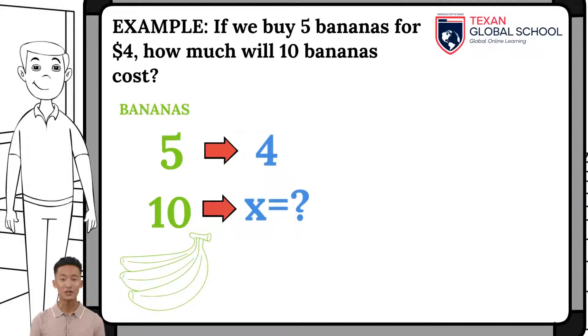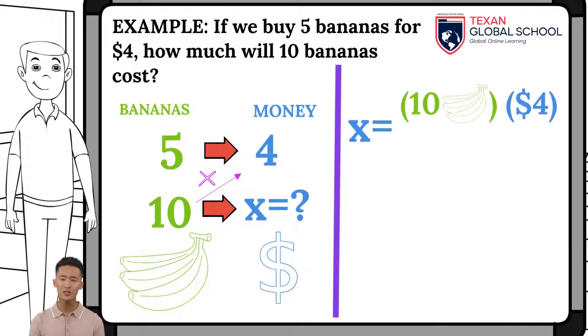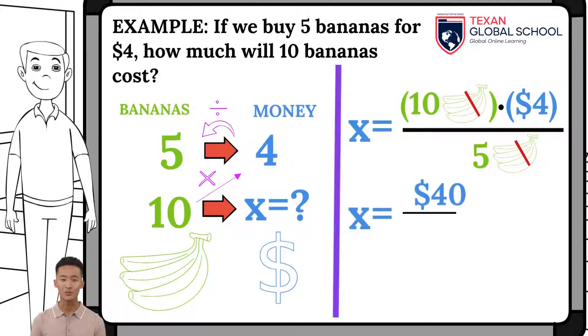We can see that the column on the left is bananas, and the column on the right is money. Once the Rule of Three has been formulated, we can solve it. Let us write the unknown, X equal to the product of the ten bananas with the four dollars, divided by the five bananas. We can see that the bananas cancel out, getting the desired units, the dollars. When performing the multiplication of ten times four equals forty, divided by five results eight. Therefore, if we buy five bananas for four dollars, ten bananas will cost eight dollars. As we can see, ratios and proportions immersed in rules of three.